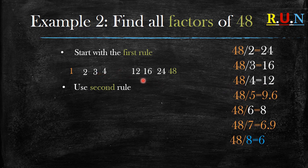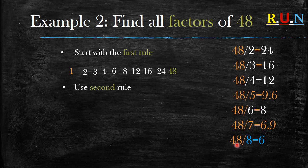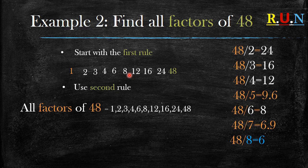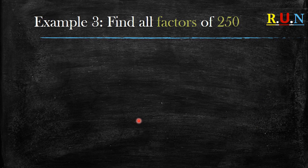48 divided by 5 gives you 9.6, which is not a whole number, so we skip it. 48 divided by 6 gives you 8 — write 6 on this side and 8 on the other. 48 divided by 7 gives 6.9 — not a whole number. 48 divided by 8 gives you 6, but notice that 8 and 6 are already in our list — that means you've found all the factors. All factors of 48 are 1, 2, 3, 4, 6, 8, 12, 16, 24, and 48.